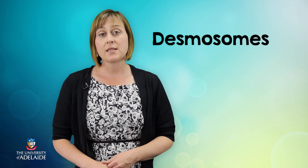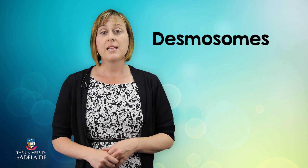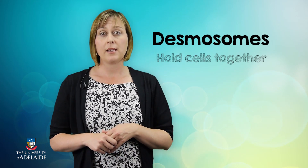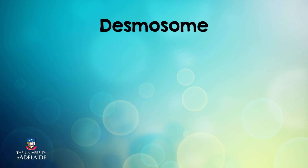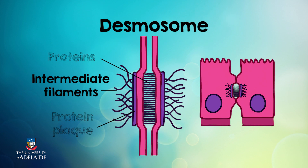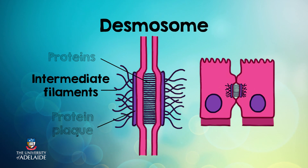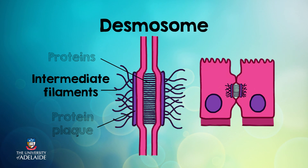Desmosomes are the second type of cell junction, and these function to firmly adhere and strengthen the bond between cells. Desmosomes strengthen the connections of adjacent cells. They are found just under, or next to, tight junctions, and are formed by proteins that interlock and connect the cells. If my hand represents a tight junction, desmosomes are like my interlocking fingers, which firmly keep the junction together and are resistant against stretching and twisting.